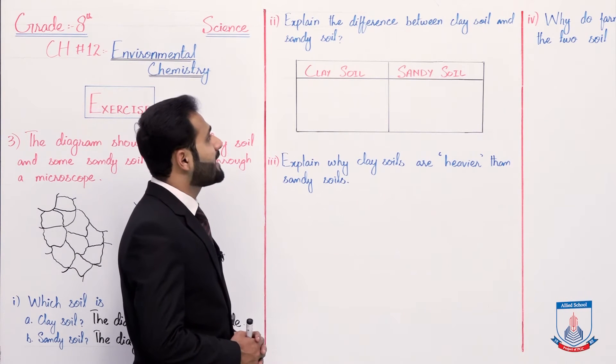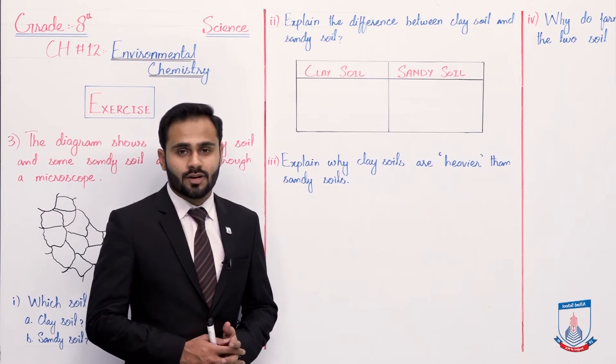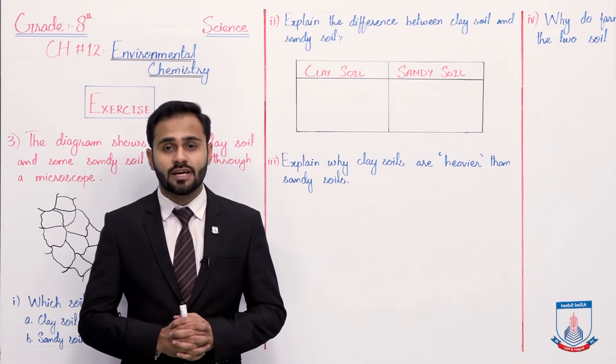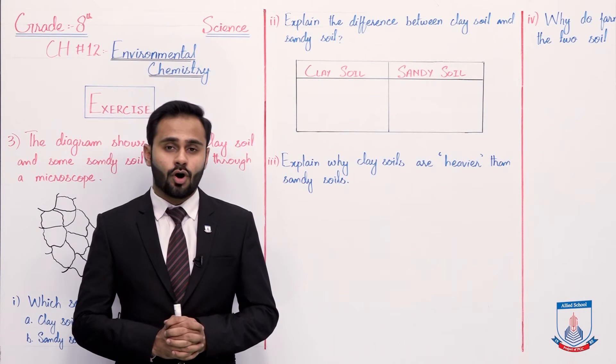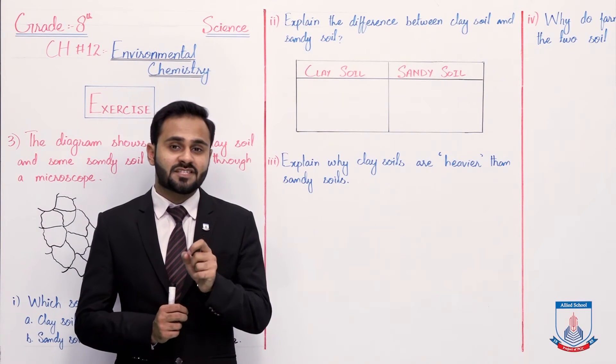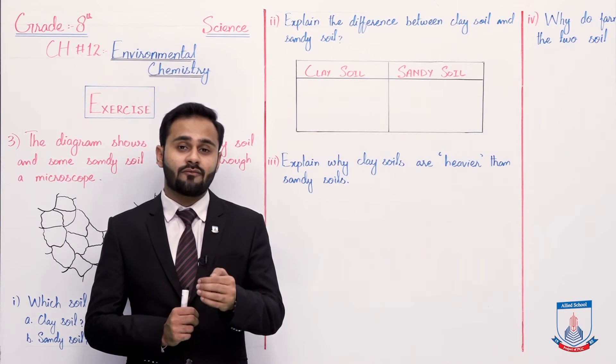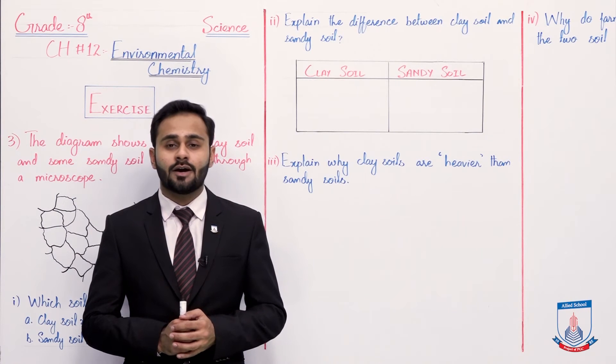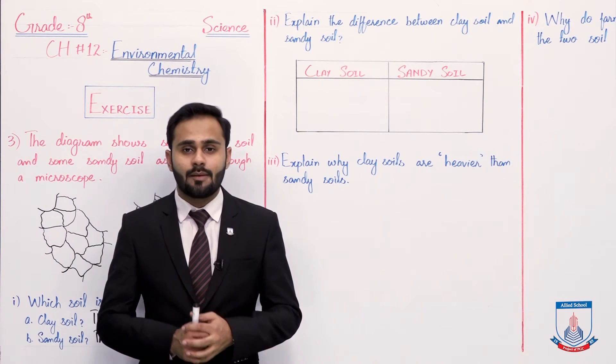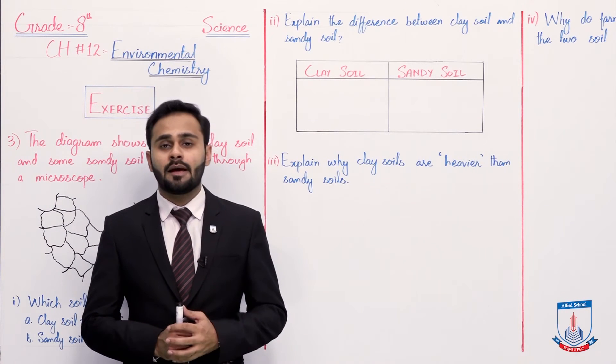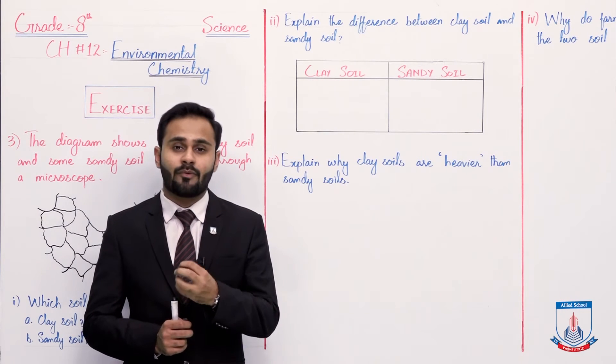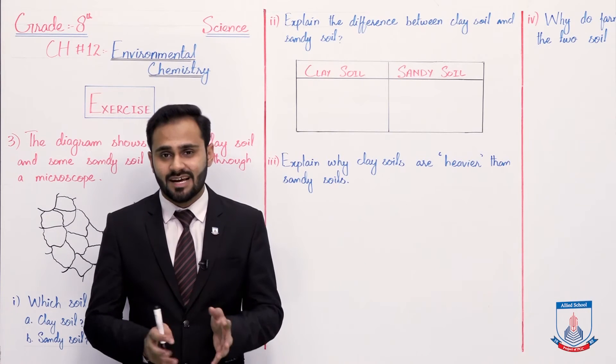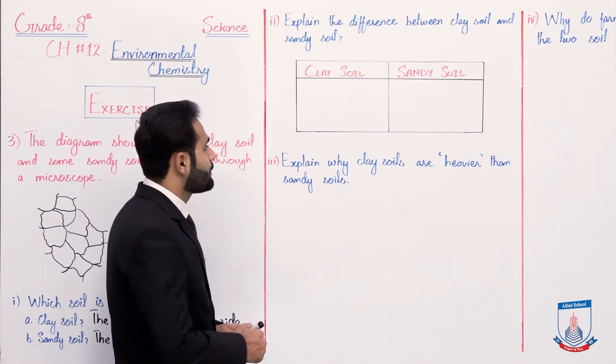Now question number two: explain the difference between clay soil and sandy soil. Humne discuss kiya tha apne lecture mein ke clay soil jo hai iske particles bohot small hote hai aur sandy soil ke particles kaafi large hote hai. Aur clay soil ke particles ke darmiyaan mein spaces bohot kum hoti hai, that's why us mein kaafi kum air jo hai wo trap ho jati hai. Aur similarly agar hum baat kare sandy soil ki, sandy soil ke particles jo hai in mein spaces zyada hoti hai to isme air bhi jo hai wo kaafi zyada trap ho sakti hai. Aur similarly clay soil mein pani jo hai wo hold ho jata hai kyunke isme spaces bohot kum hai, to water ke molecules jo hai wo trap ho jate hai.